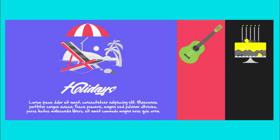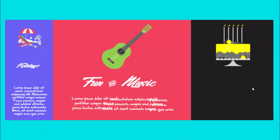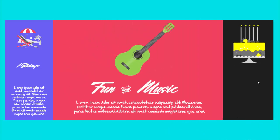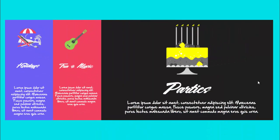In today's tutorial I'm going to show you how to create this creative PowerPoint slide. I have created three parts where I've added illustrations — the first one is a beach chair with the text 'Holidays' and some detailed text. There's also a guitar and a cake. When you click, it becomes extended and you can add detailed text, then click again to go to the third one.